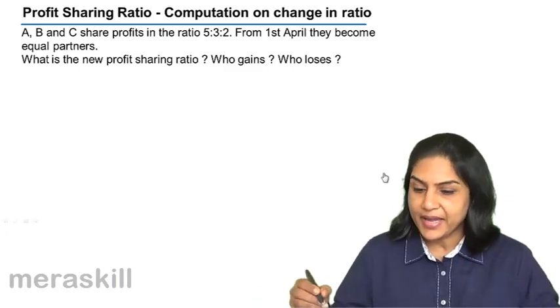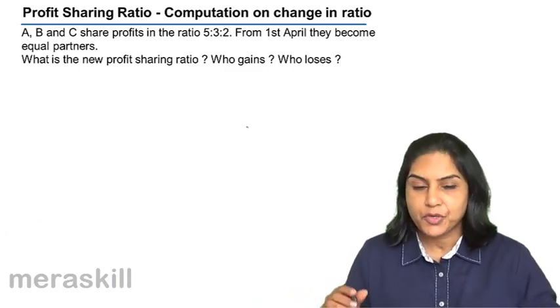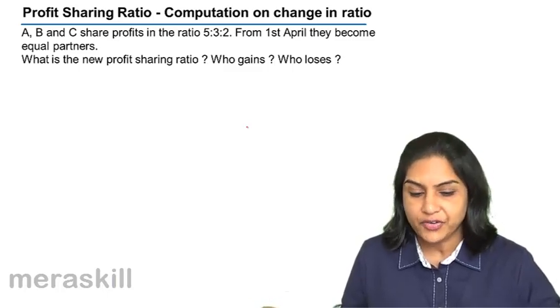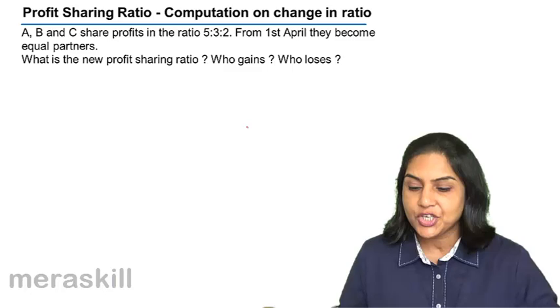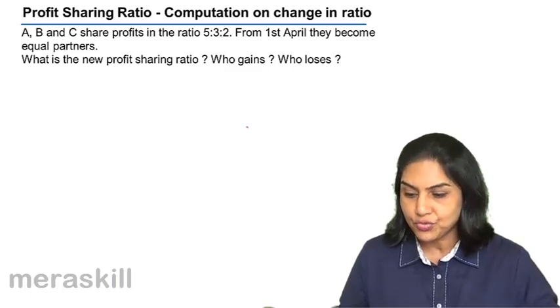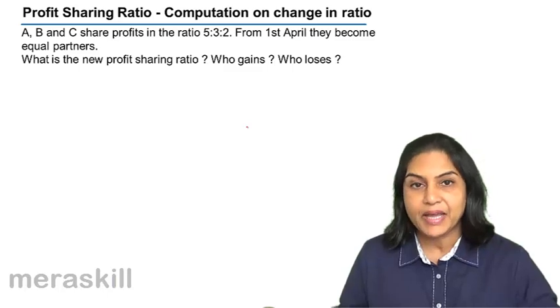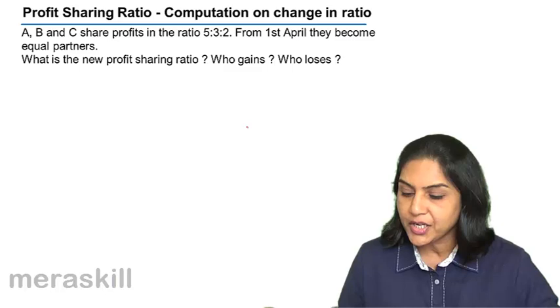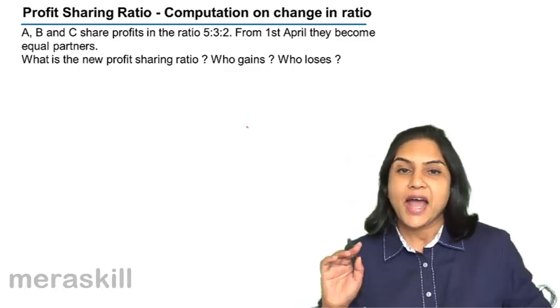Let us consider case by case. First and foremost, with a few examples in case of change in ratio: A, B, C share profits in the ratio 5:3:2. From 1st April, they become equal partners. What is the new profit sharing ratio? Who gains and who loses?